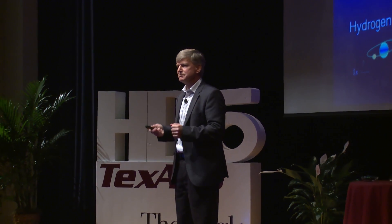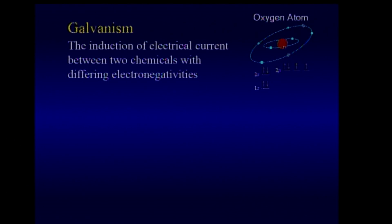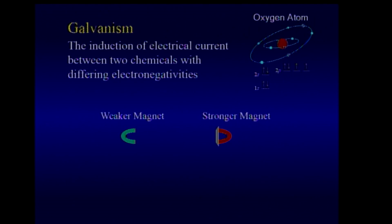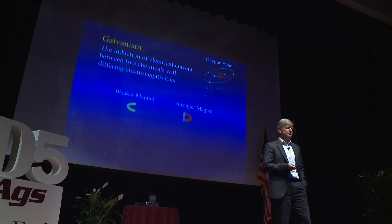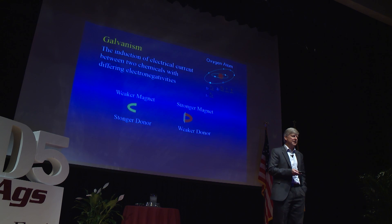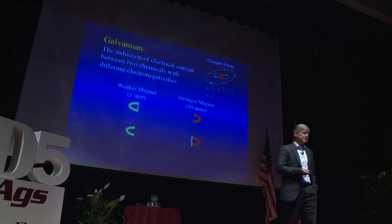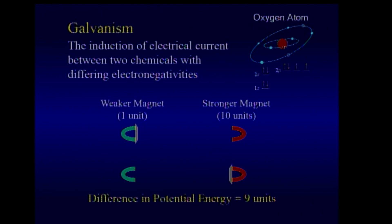All of metabolism is built on this very basic chemistry. Galvanism can be redefined as the induction of electrical current between two chemicals differing in electronegativities. We all intuitively understand that if you move a stronger magnet closer to a weaker magnet, it will attract the piece of iron. We could also classify those as a stronger donor and a weaker donor.